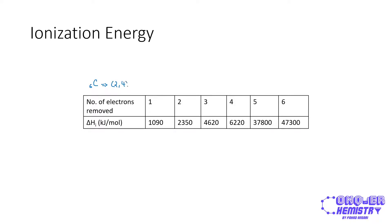The first thing you will notice is that the ionization energy values from the first all the way to the sixth are increasing. The reason is that the first four ionization energies involve electrons in the second principal quantum shell, because outer electrons are always removed first.